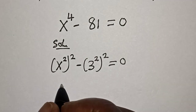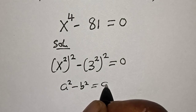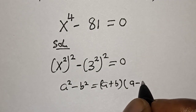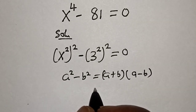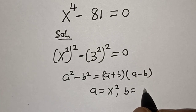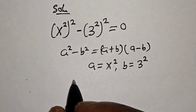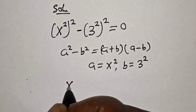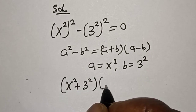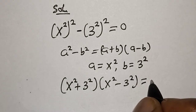Now this is a difference of two squares. The identity a squared minus b squared is equal to a plus b multiplied by a minus b. Here a is equal to x squared and b is equal to 3 squared. Let's substitute. We have x squared plus 3 squared multiplied by x squared minus 3 squared is equal to 0.